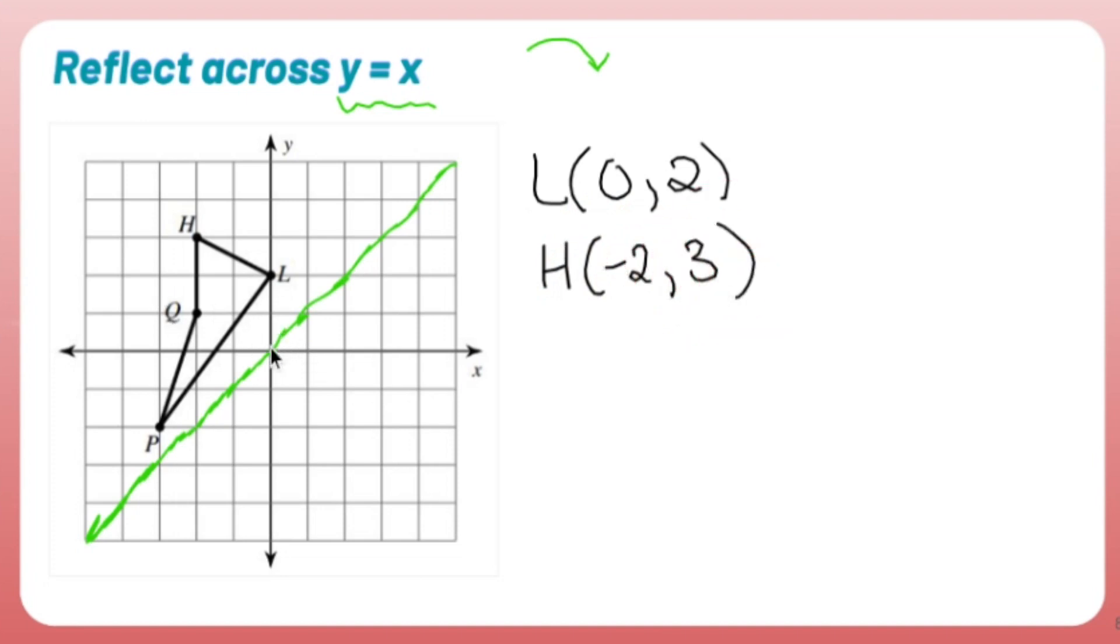The original Q is left two and up one. So the original Q is negative two, positive one. And the original P is left three, down two, negative three, negative two.